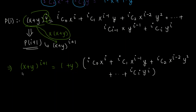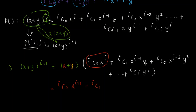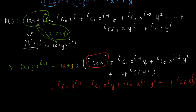We multiply the entire expansion first by x (written in red). The coefficients do not change when multiplying by a variable — only the powers increment. This gives: iC0 · x^(i+1) + iC1 · x^i · y + iC2 · x^(i-1) · y² + … + iCi · x · y^i.